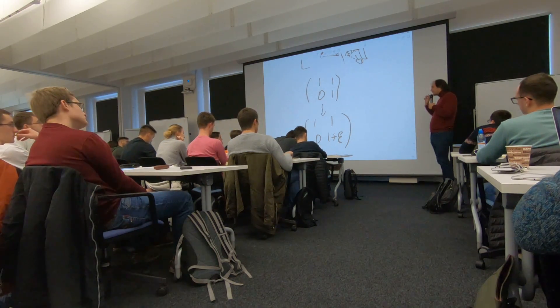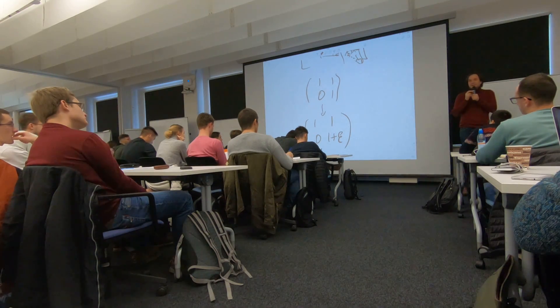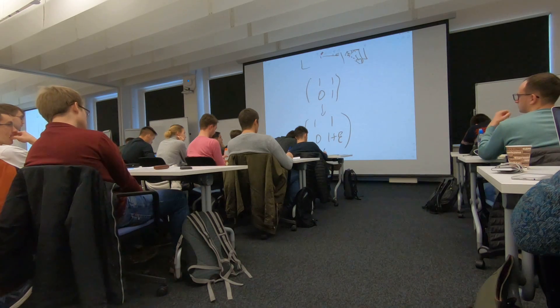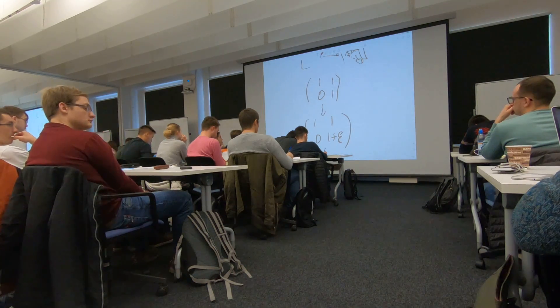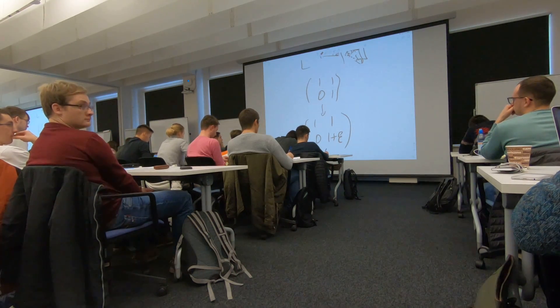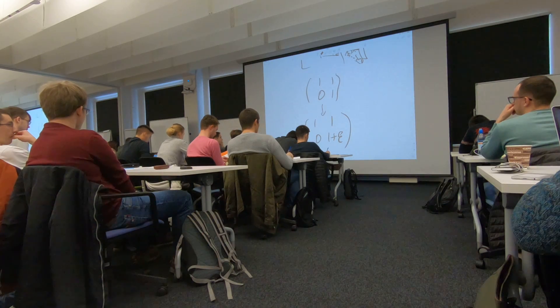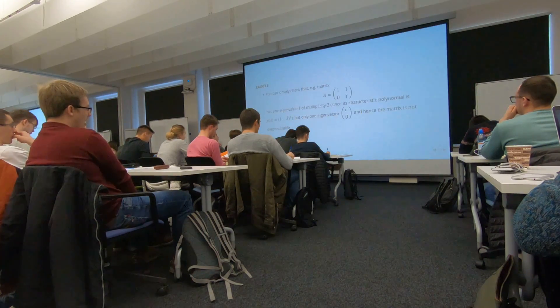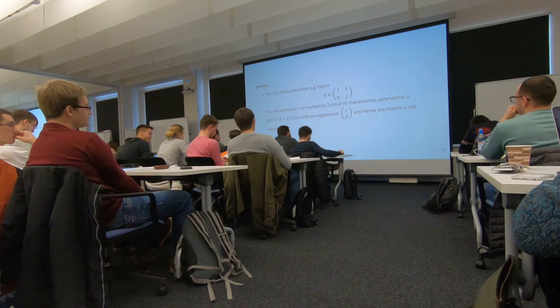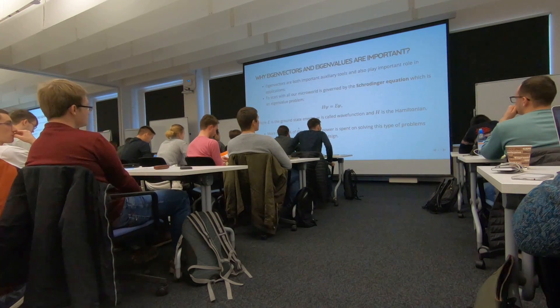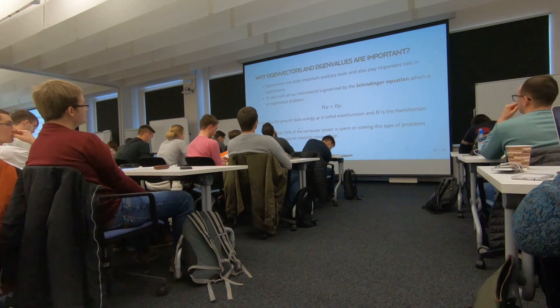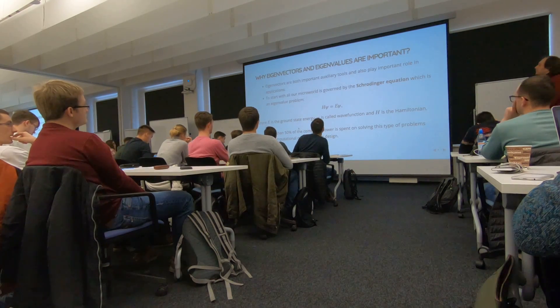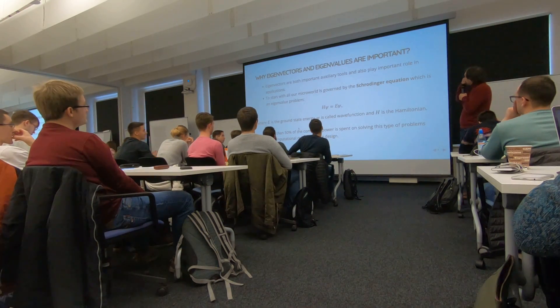So Jordan form is very unstable for numerical computations. There are small exceptions when we try to regularize it and somehow relax. But in practice, no one uses it except for some analytical or theoretical considerations. So before going into how to compute the eigenvectors and eigenvalues, I'd like to discuss the applications.